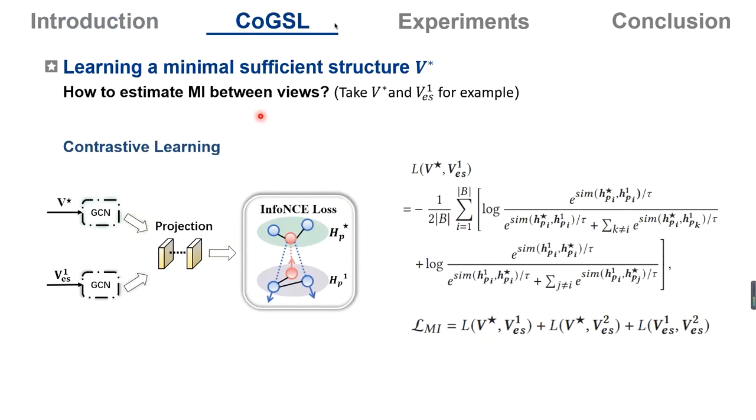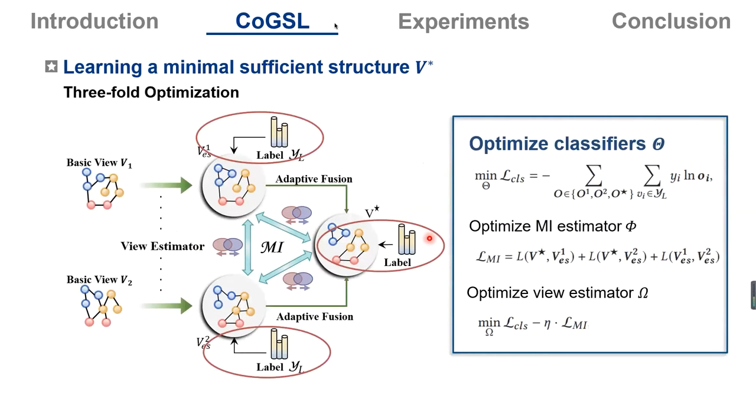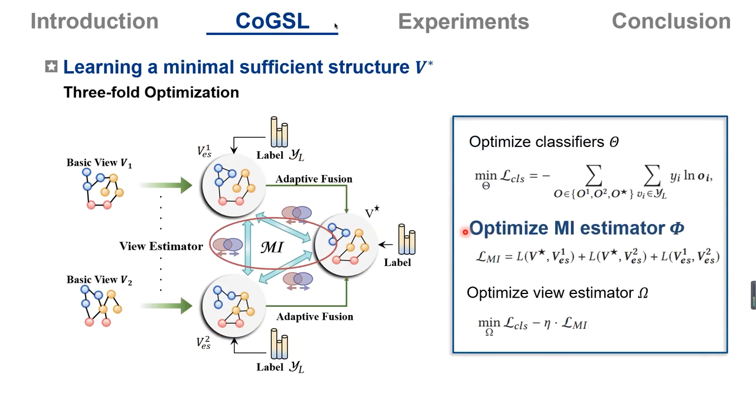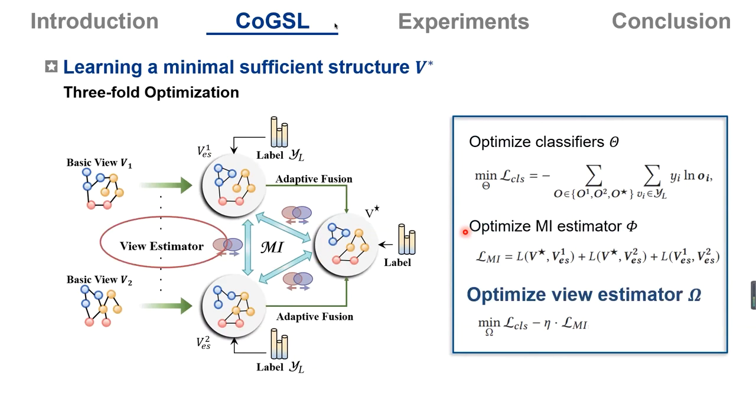The next question is, how to estimate mutual information between views? Here, we use the InfoNCE loss, which is widely used in contrastive learning. There is a connection between InfoNCE loss and mutual information. If we optimize the InfoNCE loss, we can capture the real value of the mutual information. And finally, we comprehend all of the optimizations into this threefold optimization. We first optimize the classifiers for each view. And then we optimize the mutual information estimator to capture the real value of the mutual information between each two views. And finally, we optimize the view estimator by this objective. This objective says that we should minimize the information between every two views, but they still can perform well.